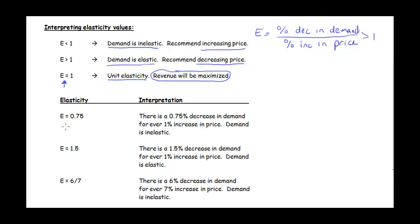Once you have an elasticity value, it's important to be able to interpret it. If E equals 0.75, that means there is a 0.75% decrease in demand for every 1% increase in price — think of it as 0.75 over 1 — and the demand is inelastic. If E equals 1.5, there is a 1.5% decrease in demand for every 1% increase in price, and demand is elastic. If E equals 6/7, we can say there is a 6% decrease in demand for every 7% increase in price; since 6/7 is less than one, demand is inelastic.